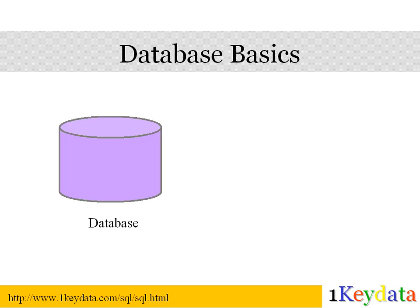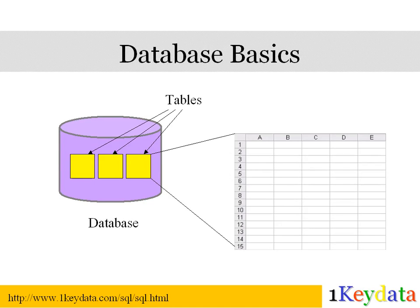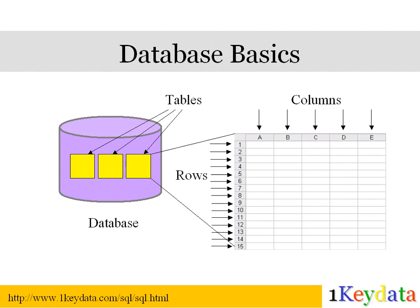In a relational database, data is stored in tables. Each table has a table name. A table consists of columns and rows. Each column is a field in a record, and there is a column name associated with each column. Each row represents one record. Usually, when we say how many records we have, we are referring to the number of rows. With this information, now we are ready to dive into SQL.